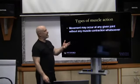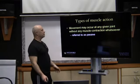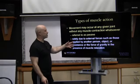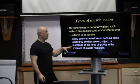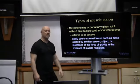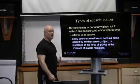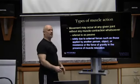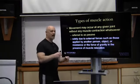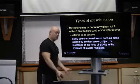Movement may occur at any given joint without any muscle contraction whatsoever. This is referred to as passive — it's solely due to external forces such as those applied by another person, object, or resistance, or the force of gravity in the presence of muscle relaxation. If the muscles are working they hold us up, but if we just relax, we're going to collapse — the muscles relax and can't hold the bones in position and we would just fall to the floor.